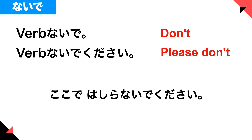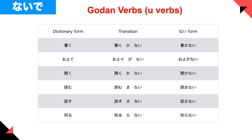For example, ここで走らないでください — please don't run here. So ここで means 'here,' 走らないで means 'don't run,' and kudasai means 'please.' So let's quickly review the conjugation of the verbs.